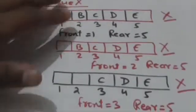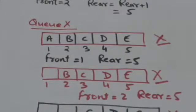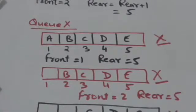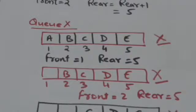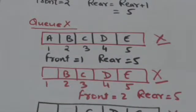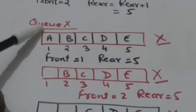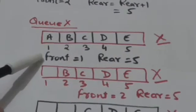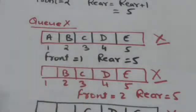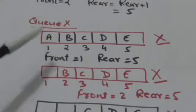Now suppose there is a queue X which can hold only 5 elements, and the lower bound of array X is 1. Variable front contains the index of the front element of queue X. Suppose queue X contains 5 elements A, B, C, D, and E, and variable front is equal to 1 and variable rear is equal to 5. Here A is the front element of queue X.